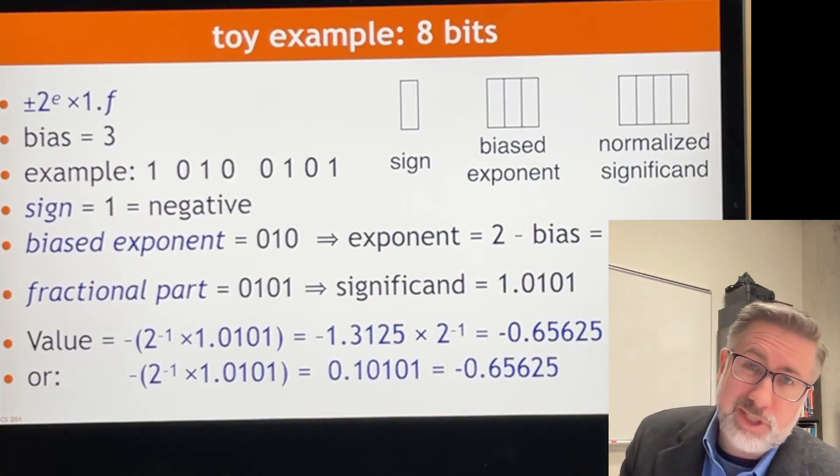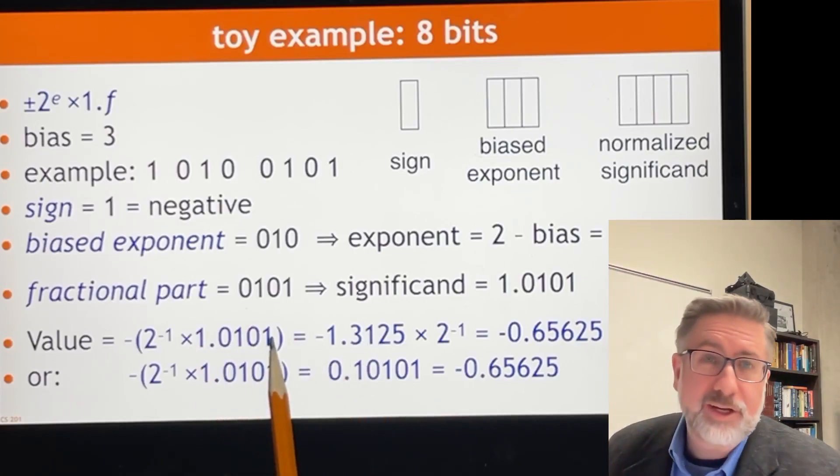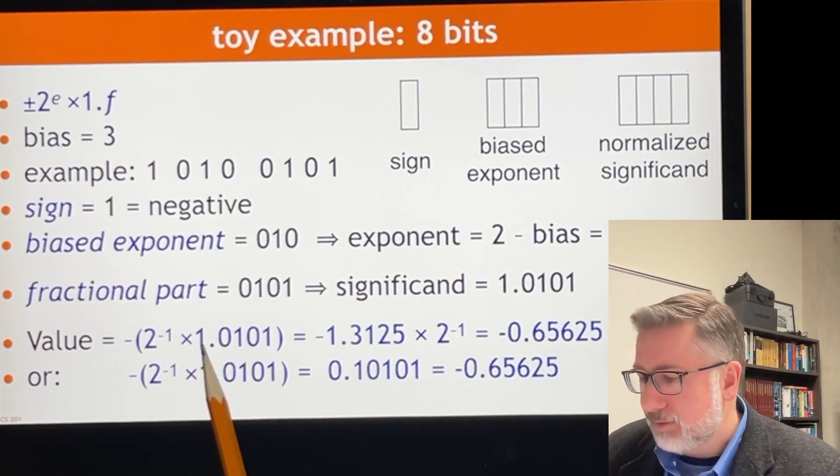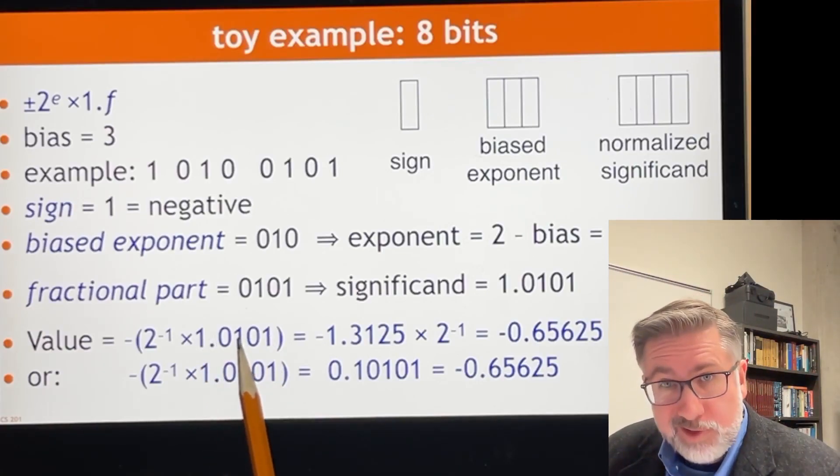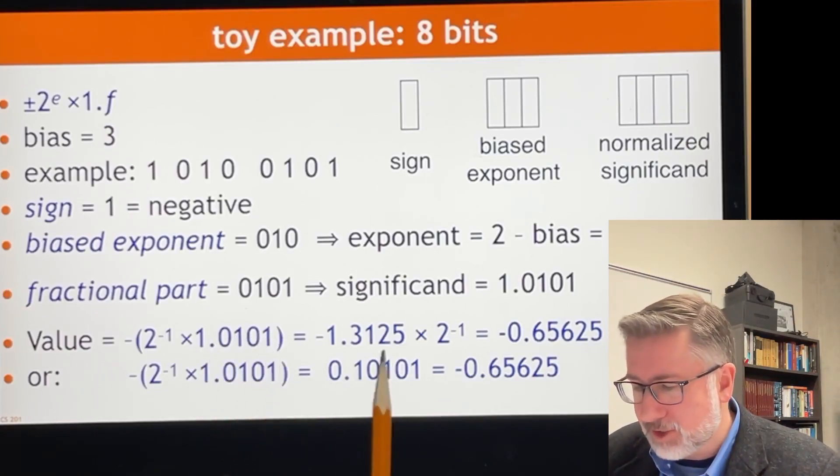Now there's two ways we can do this. We can either take that number, 1.0101, and convert it as it is to base 10, which is 1, and then not a half, but a quarter, and not an eighth, but a sixteenth. So 1 plus a quarter plus a sixteenth is that.